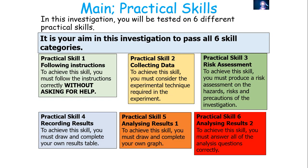In this next part of the lesson, we're going to look at what the experiment would actually look like. To pass your practical endorsement, there are six key CPAC skills to consider: following instructions without asking for help; collecting data and considering experimental technique; producing a risk assessment on hazards, risks, and precautions; recording results by drawing and completing your own results table; and drawing your own graph and answering analysis questions correctly.